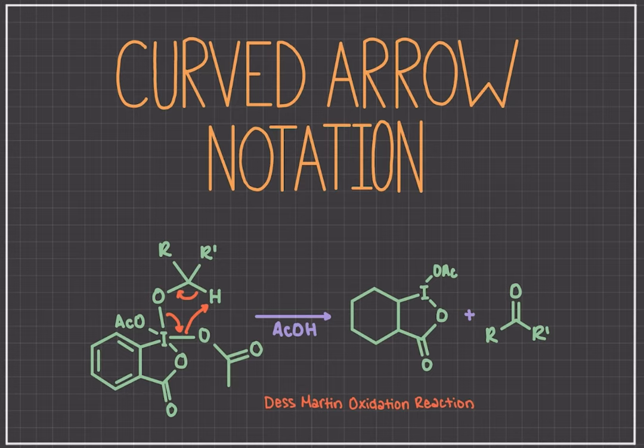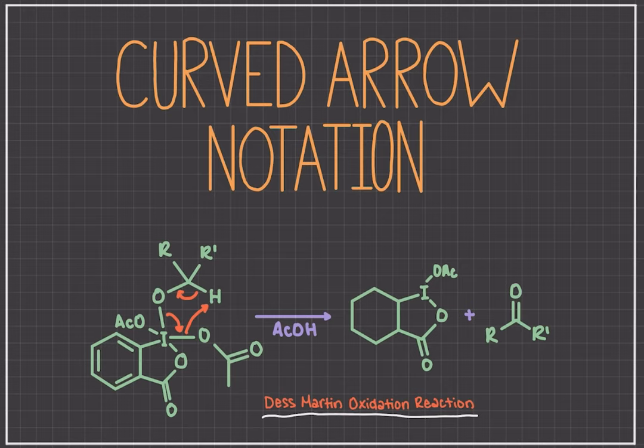For example, here we have drawn the Desmartin oxidation reaction. This reaction oxidizes alcohols to make them into aldehydes, ketones, or carboxylic acids. This reaction is super important in chemically synthesizing many drugs, vitamins, and fragrances. It looks really confusing and messy right now, but after understanding how curved arrow notation works and going through a few examples, hopefully it'll be a little clearer. So let's get right into it.